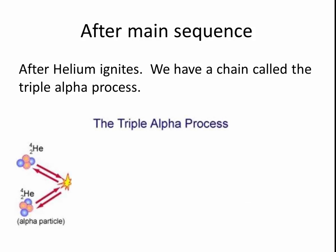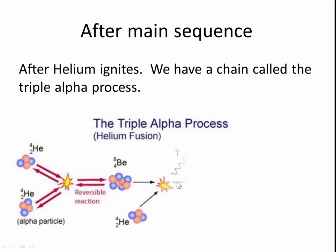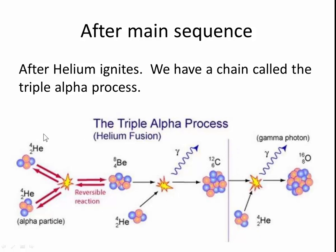You basically have three alpha particles coming together, but not at the same time. Two alpha particles come together and it produces helium plus helium produces beryllium. Then we have a third helium nucleus, an alpha particle, combines to make carbon-12.